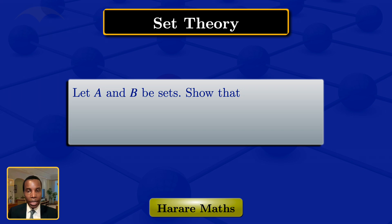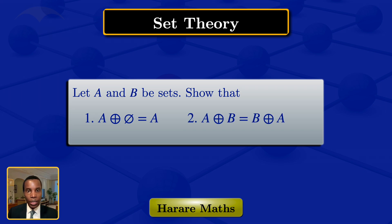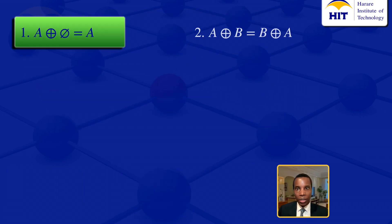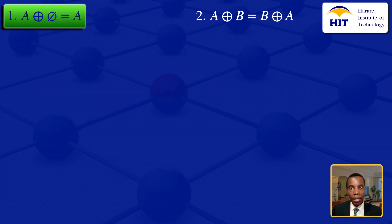Let A and B be sets. I'm going to show that the symmetric difference of A and the empty set equals the set A, and then the symmetric difference of A and B equals the symmetric difference of B and A. I'll start by looking at the first question: the symmetric difference of A and the empty set.